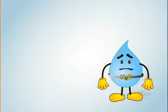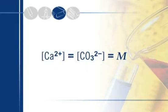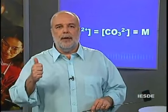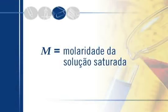Como podemos relacionar KPS e solubilidade? Vamos inventar juntos um exercício: sabendo que o KPS do carbonato de cálcio a 25°C é 9 × 10⁻⁹, determinar a solubilidade deste sal em água pura em miligramas por litro. A concentração de Ca²⁺ é igual à concentração de CO₃²⁻, e ambas valem a molaridade M da solução, porque o cálcio e o carbonato são gerados em quantidades iguais a partir do sólido. M é a molaridade da solução saturada.